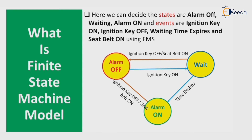Let's see how it will work. We have three states: alarm off state, alarm on state, and wait state. We have the events: ignition key on and ignition key off. Initially, the alarm is in the off condition. If the ignition key is on, it will wait for some time interval to check whether the seat belt is on or off. If the time expires but the seat belt is not in the on condition, it will move from the wait state to the alarm on state, and the alarm will start to buzz until the seat belt is on.